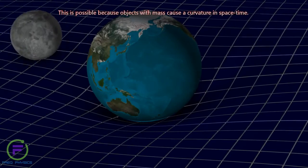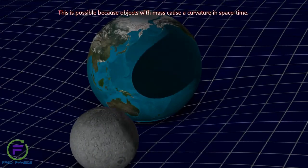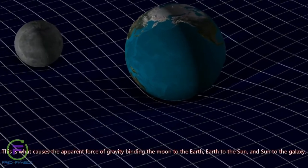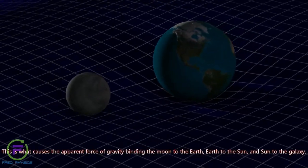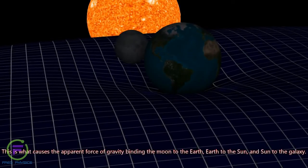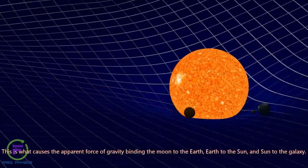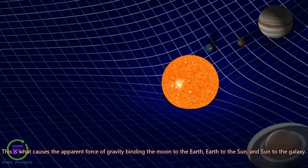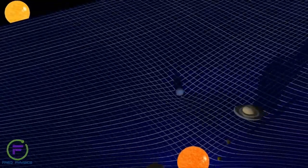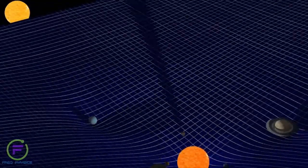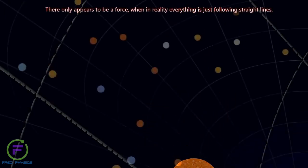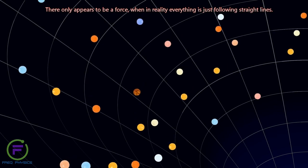This is possible because objects with mass cause a curvature in space-time. This is what causes the apparent force of gravity binding the Moon to the Earth, Earth to the Sun, and Sun to the galaxy. There only appears to be a force, when in reality everything is just following straight lines.